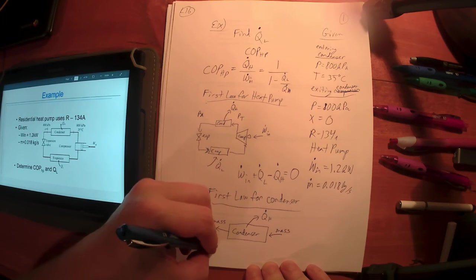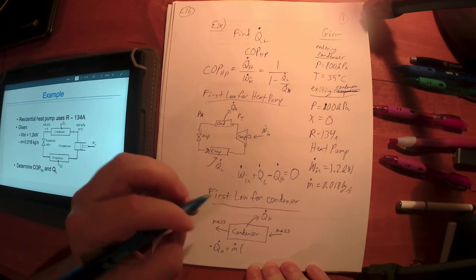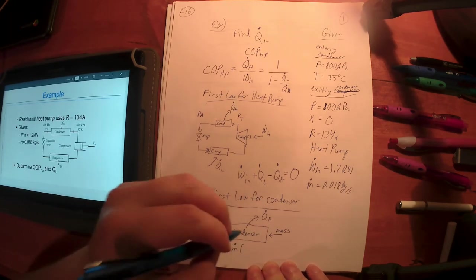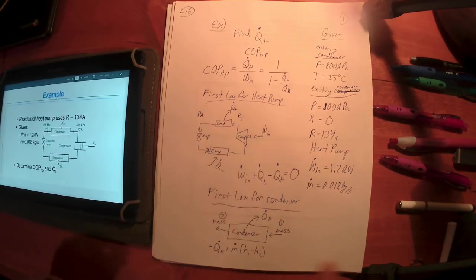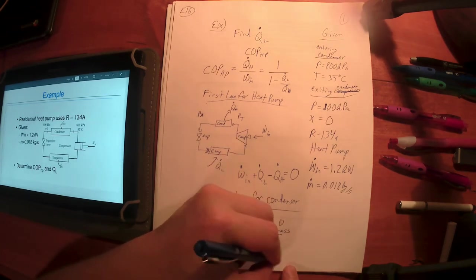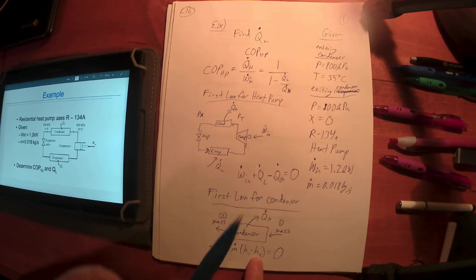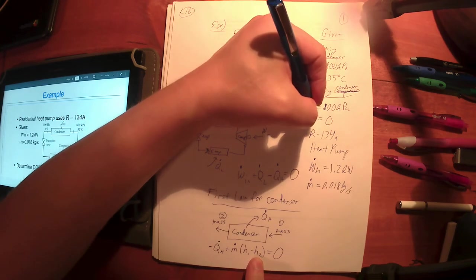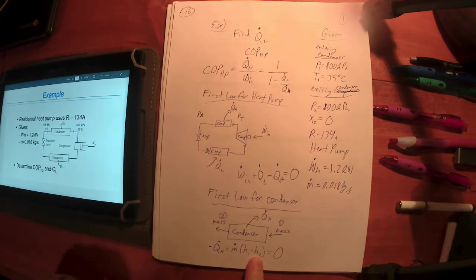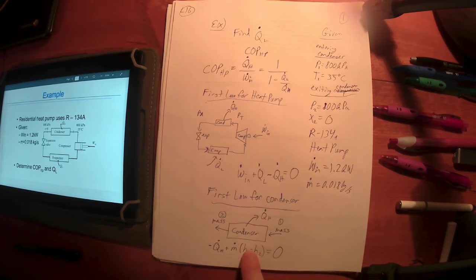The first law for the condenser looks like this: minus Q dot H plus m dot times—assuming that thing's flowing steadily—we'll say that this is one and we'll say that this is two, so it's going to be h1 minus h2. I don't have information on the kinetic energy, so we're going to assume it's negligible in this case. That's equal to zero. So I know m dot, I'm looking for QH. Can I find h's? Yes. I know this is what I'm now calling one and this is now what I'm calling two.